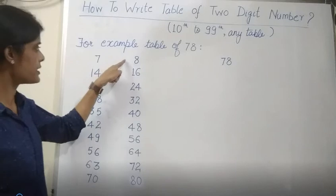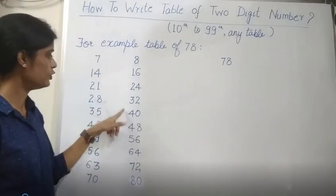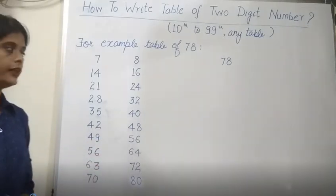Similarly, for a table of 8, 8 table: 8, 16, 24, then 32, 40, 48, 56, 64, 72 and then 80.